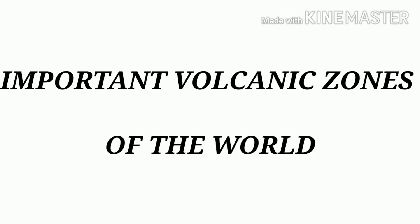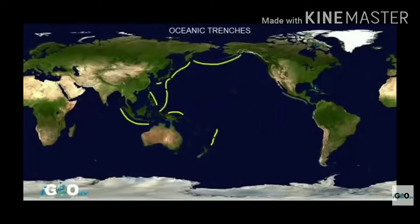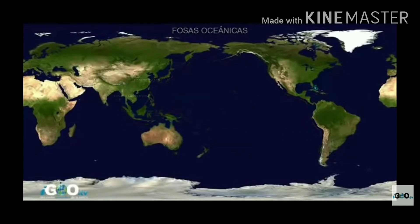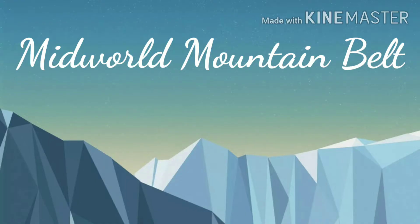Important Volcanic Zones of the World — Circumpacific Belt: volcanoes occur near earthquake belts around the young fold mountains. The Circumpacific Belt is also known as the Pacific Ring of Fire because over 80% of the total number of active volcanoes are concentrated in this region. Among these are included 40 active volcanoes in the Andes, over 100 in the Philippines, 70 in Indonesia and 40 in Japan.